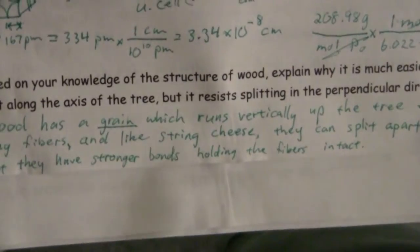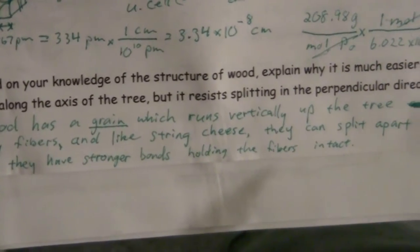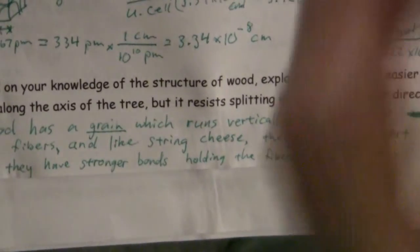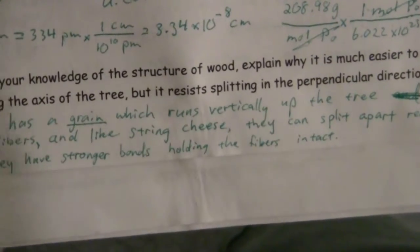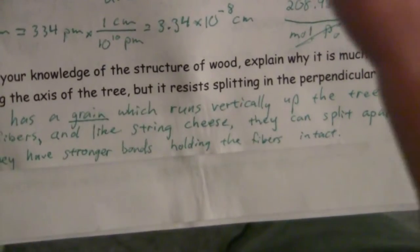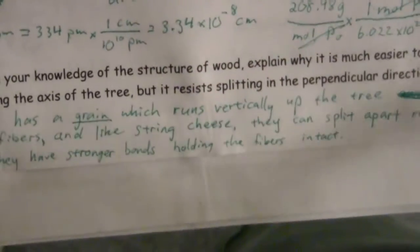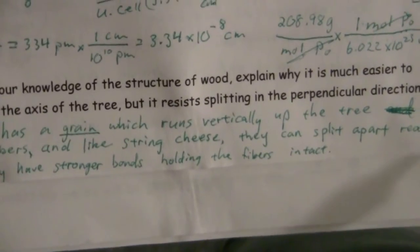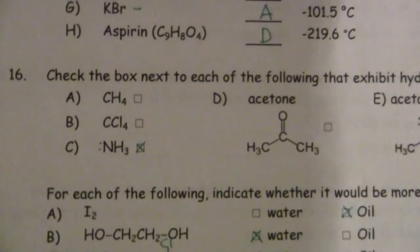and it will split apart readily, but it has stronger bonds holding those fibers intact. In other words, keeping the string all in one piece. And so the key is, it has those grains, like little sticks or tubes, and they are stronger in the direction of the grain than the bond holding those grains together. That's why it's easier to split in the direction of the grain.